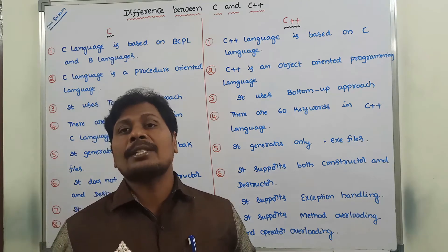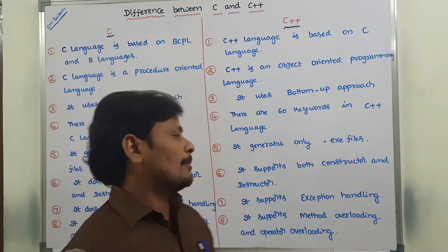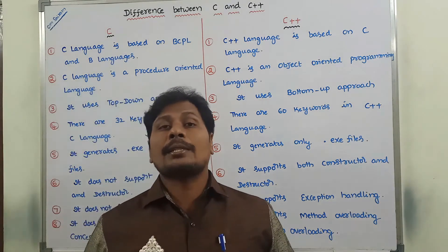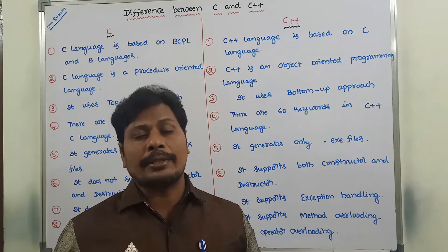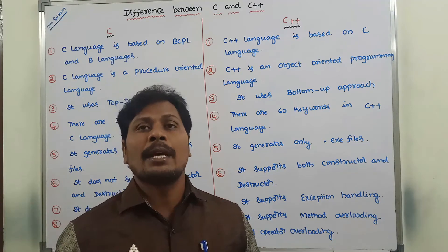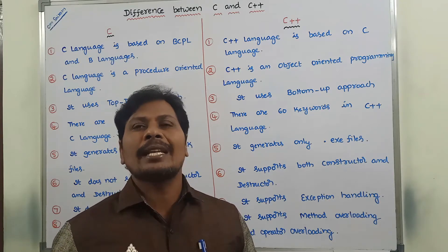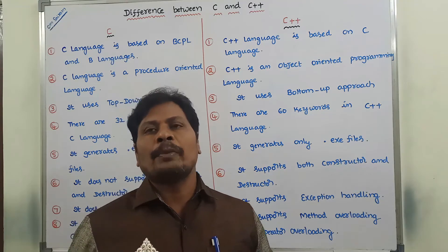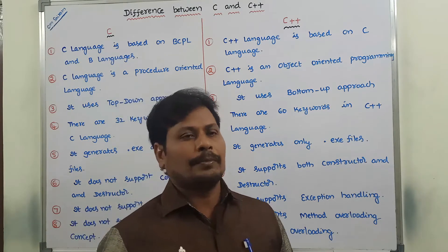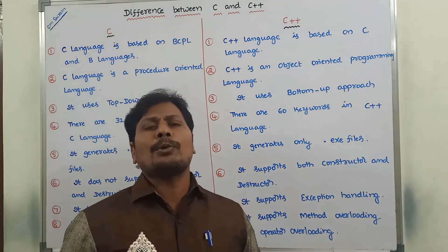C language does not support constructor and destructor, whereas C++ language supports both constructor and destructor. A constructor is used for initializing an object, and a destructor is used for destroying whatever object that was created.